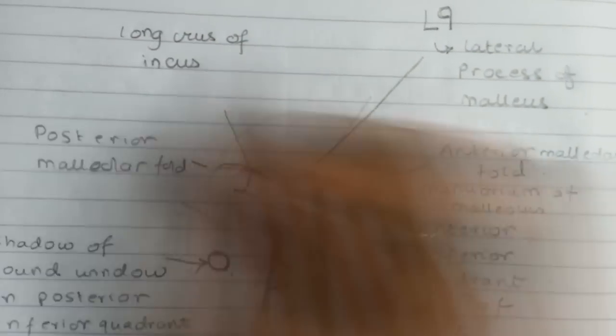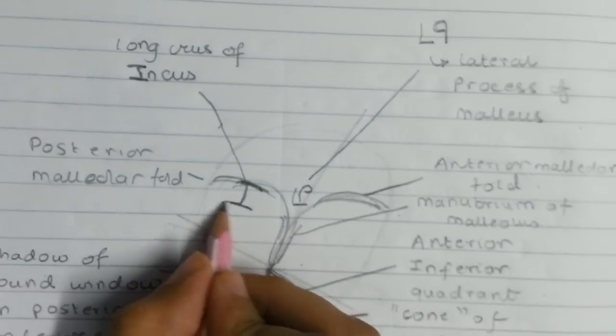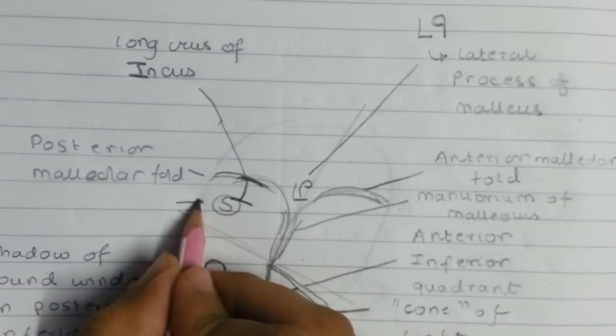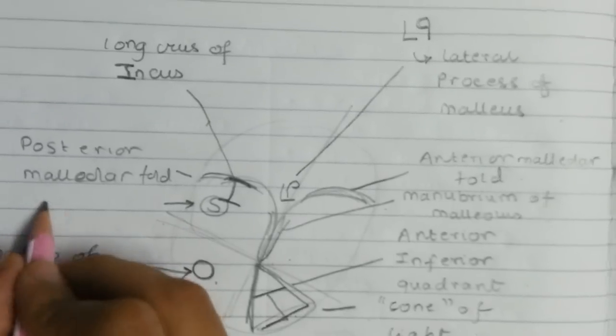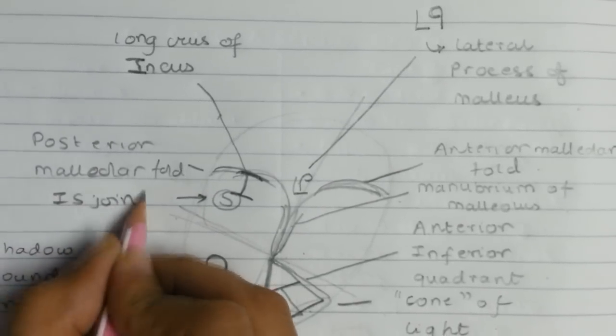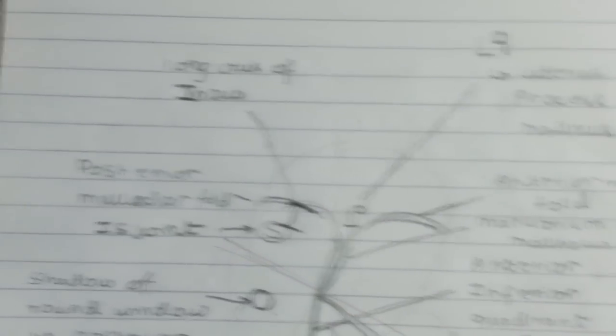We draw an I which represents the long crus of incus. Attached to the I we draw an S which represents stapes. The IS stands for the incudostapedial joint.